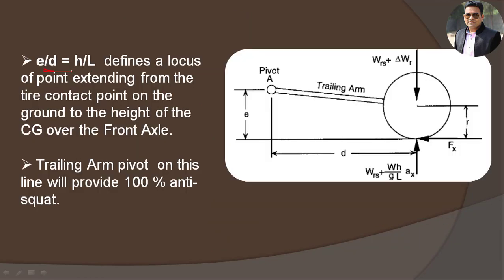E/D = H/L defines a locus of points extending from the tire contact point on the ground to the height of the CG over the front axle. For example, this is the height of our CG. The value of E/D defines a locus of points extending from the tire contact point to the height of CG over the front axle. The trailing arm pivot point on this line will provide 100% anti-squat. So in the geometry, if we are able to locate pivot point A on this line, we achieve 100% anti-squat and anti-pitch geometry.